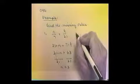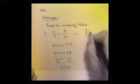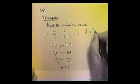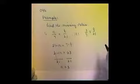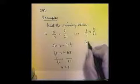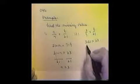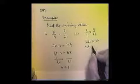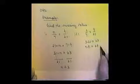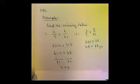Now let's check and see if this works. I want to know, is 3 over 7 the same thing as 9 over 21? Well, if it is, the cross products should be equal. That is 3 times 21, which is 63, should be the same value as 7 times 9, which is 63. So it does check, since these values are the same. So we know we have the right answer.